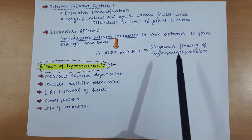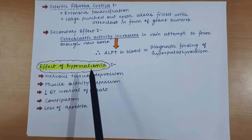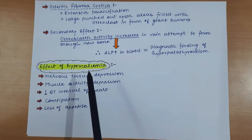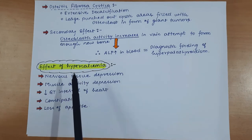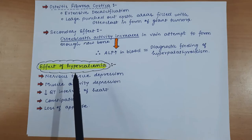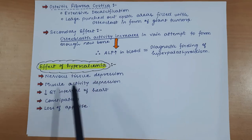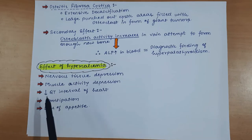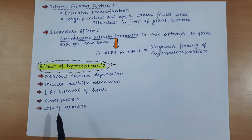Next, the effect of hypercalcemia: since parathyroid hormone has increased greatly, calcium levels are elevated. The effects of hypercalcemia that we saw in previous videos - like nervous tissue depression, muscle activity depression, decreased QT interval of the heart, constipation, and loss of appetite - all these effects of hypercalcemia can also be seen.